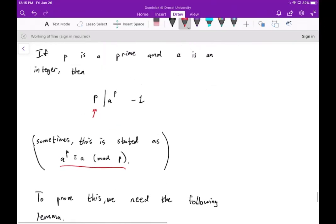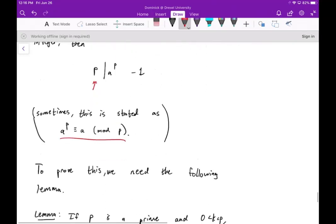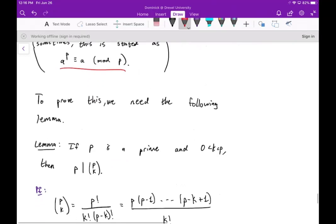Now, in order to prove this theorem, we're going to need the following lemma. If P is a prime and zero is less than K is less than P, so we have some number K, of course, so the combination is valid.